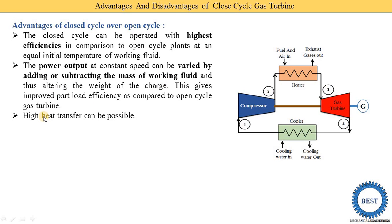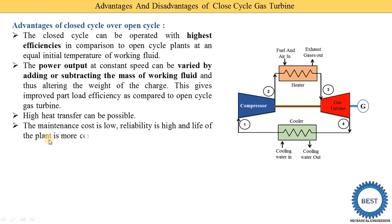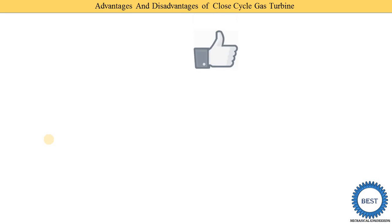Another advantage is that high heat transfer is possible. The maintenance cost is low compared to the open cycle. Reliability is high compared to the open cycle. And the life of the plant is longer compared to the open cycle. These are the various advantages of closed cycles over open cycles.